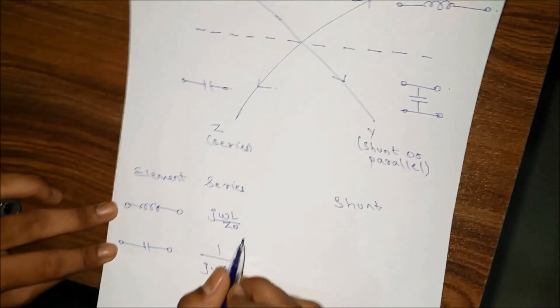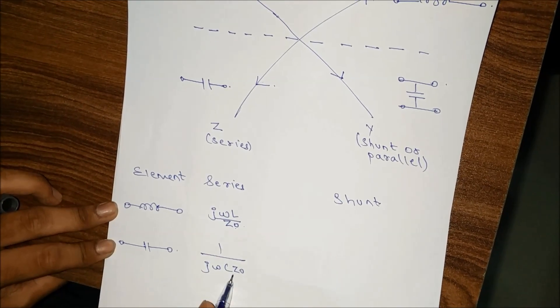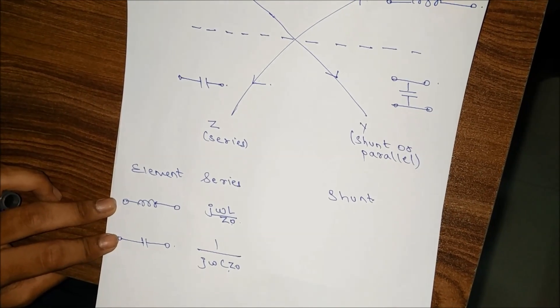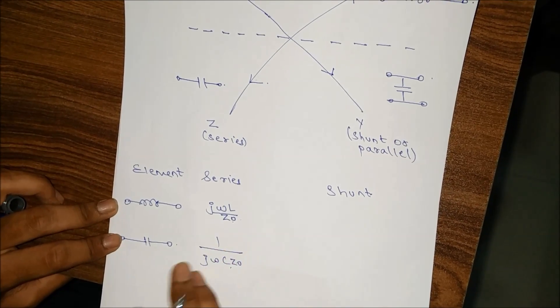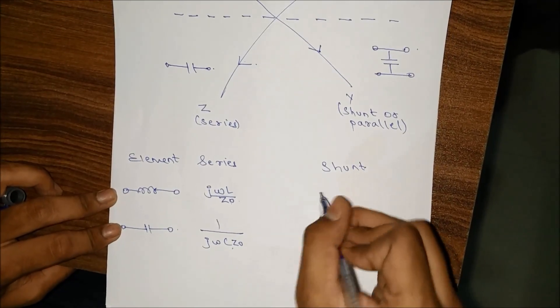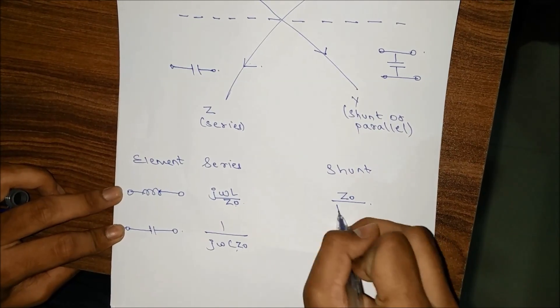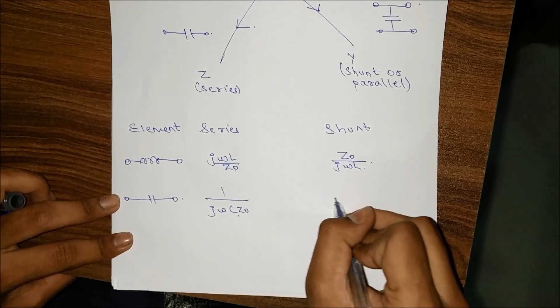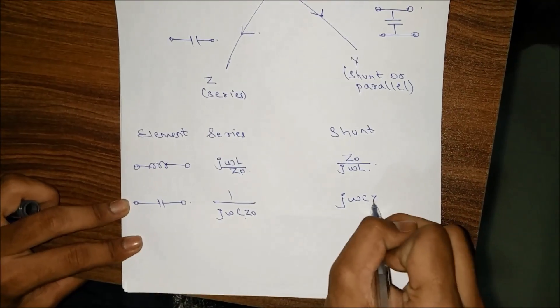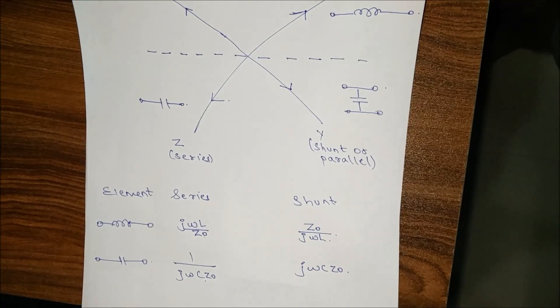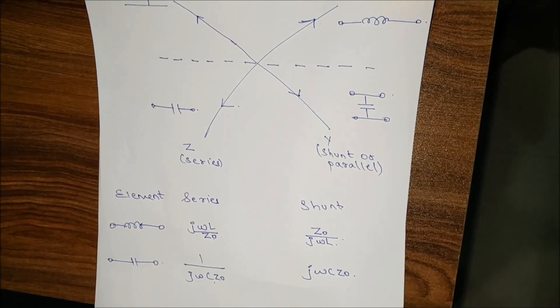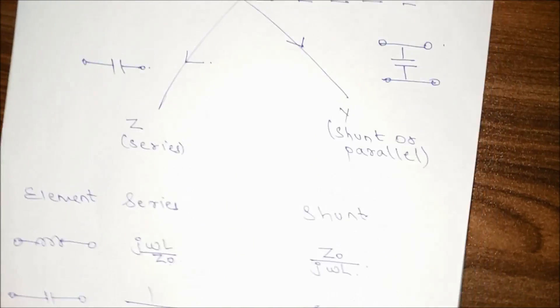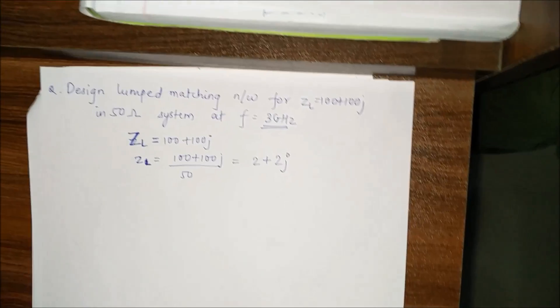This is the formula for calculating the series inductance and series capacitance. For getting the shunt inductance and shunt capacitance, just reciprocate the formula — the numerator will become the denominator and vice versa. That is the basic explanation for the formulas and concepts.